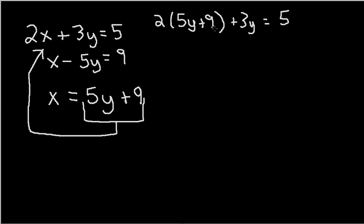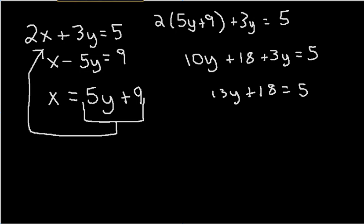And now I'm going to use linear. This is a linear equation I'm going to solve. And we're going to just distribute and simplify everything. Here we just distribute: 10y plus 18 plus 3y equals 5. Like terms, 13y plus 18 equals 5.